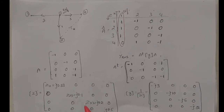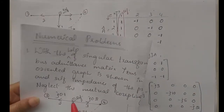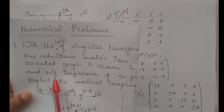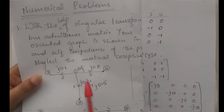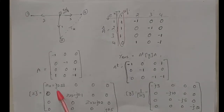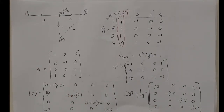It is a diagonal matrix because the given impedances are self-impedances. Here Z11, Z22, Z33, Z44 are the self-impedances, so it will be a diagonal matrix. Also, it is mentioned to neglect the mutual coupling. When we neglect mutual coupling, only the diagonal elements will be present and the off-diagonal elements will be zero. The reciprocal of this gives the Y matrix.